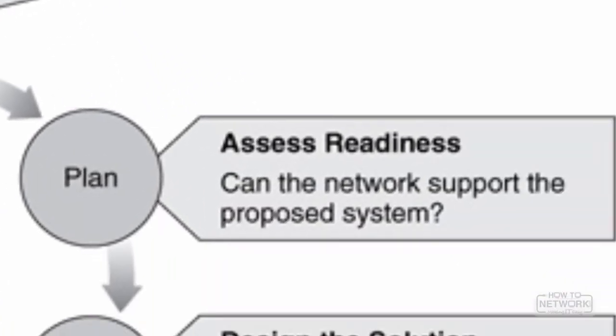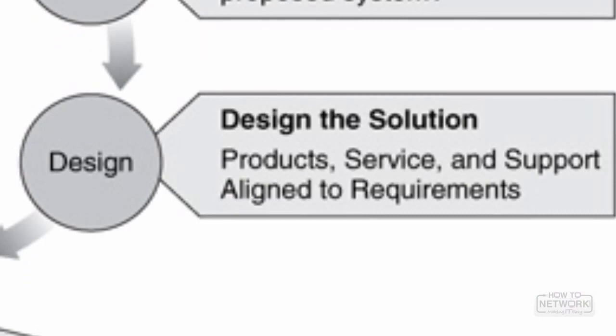The Plan phase identifies the network requirements based on goals, facilities, and user needs. This phase characterizes sites, assesses the network, performs a gap analysis against best practice architectures, and looks at the operational environment. In the Design phase, the network design is developed based on the technical and business requirements obtained from previous phases. A good design will provide high availability, reliability, security, scalability, and performance.